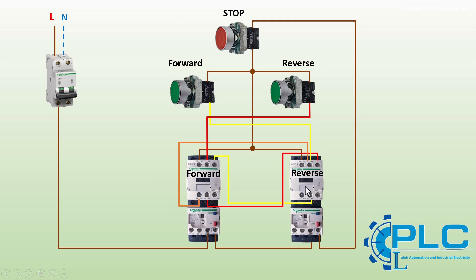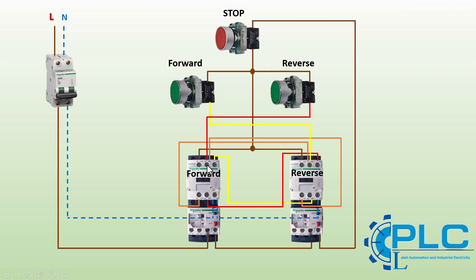Step 9: We repeat the same process for the holding circuit of the reverse contactor. This completes the wiring setup, ensuring safe and reliable operation of the forward-reverse motor control circuit. We have now completed a practical and highly useful video. I hope this video has been helpful to you. Please support the channel by subscribing and liking the video — it encourages us to create more educational content. If you have any questions or need clarification, feel free to leave a comment and I will be happy to assist you. Looking forward to seeing you in the next practical video.